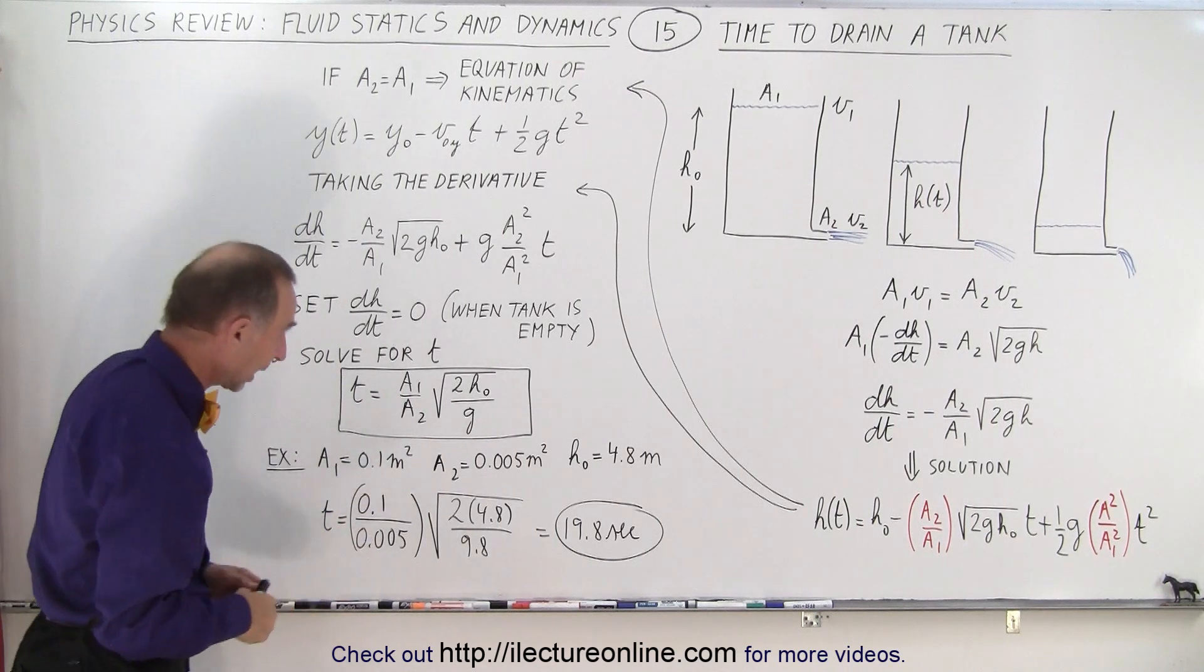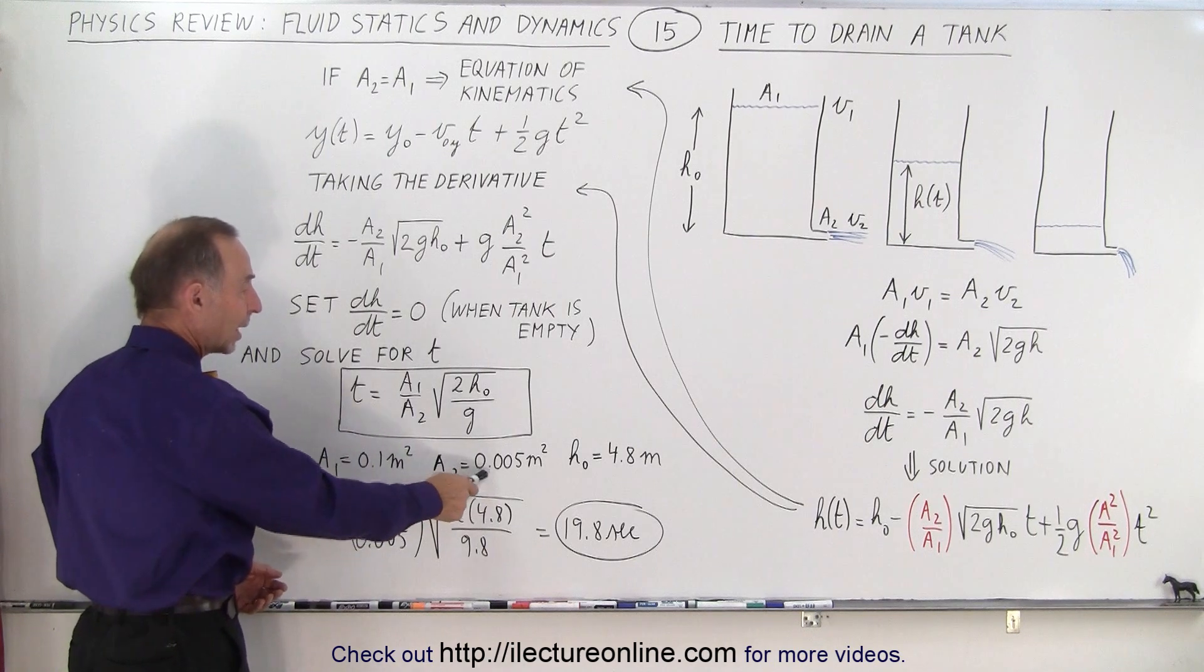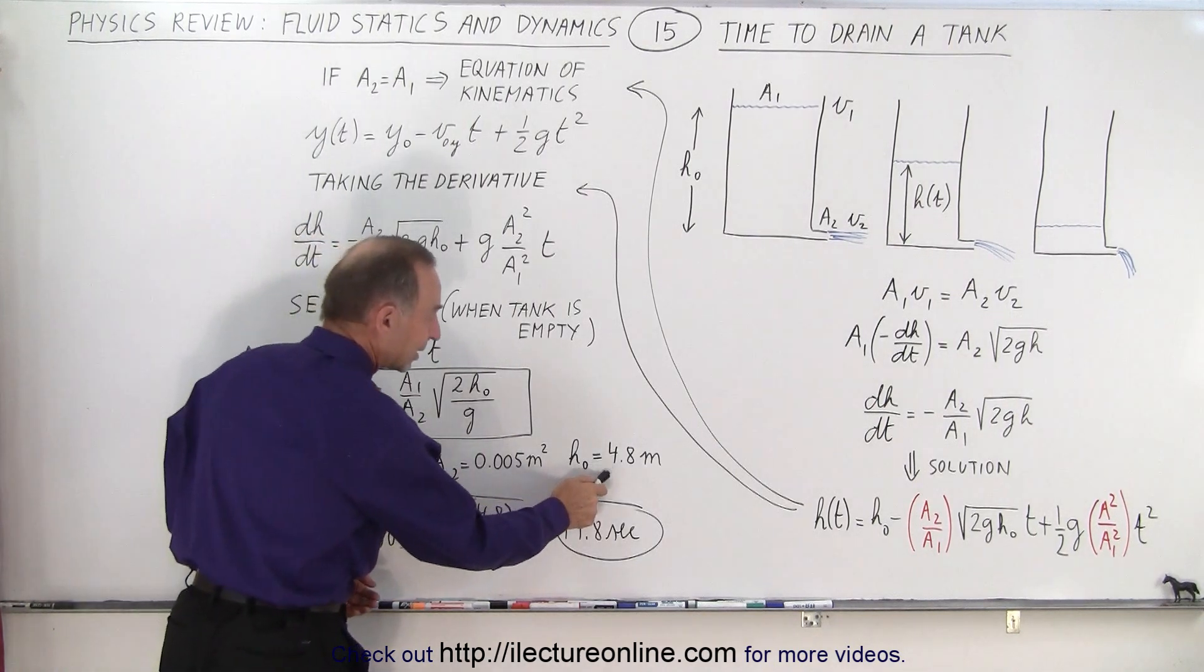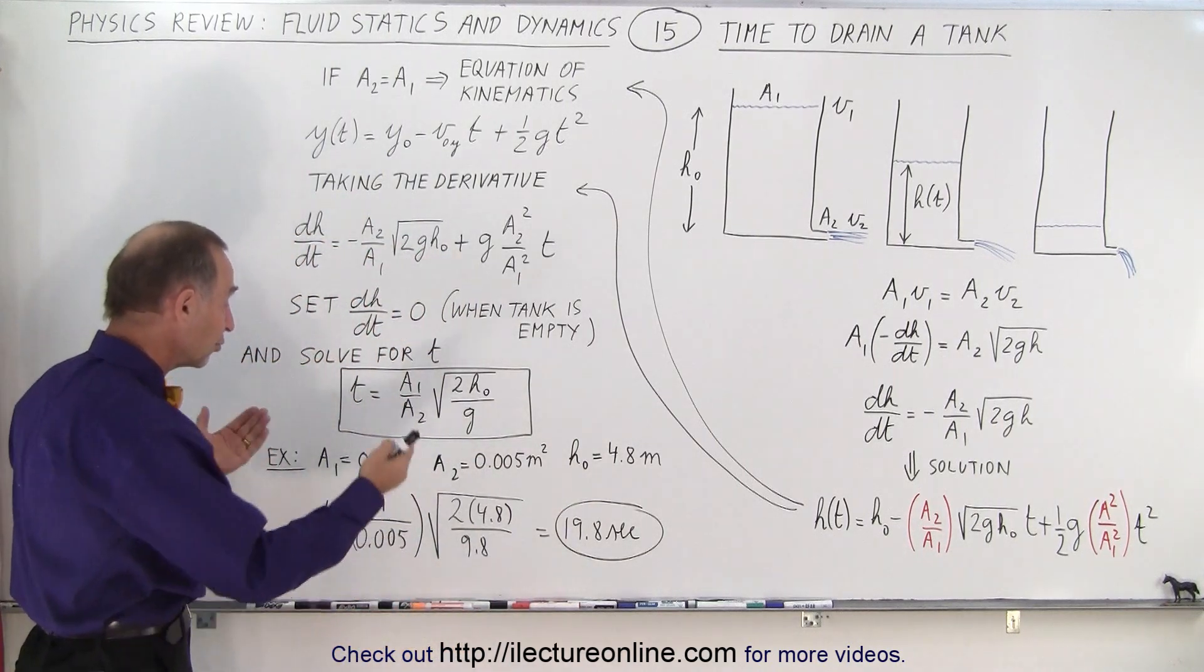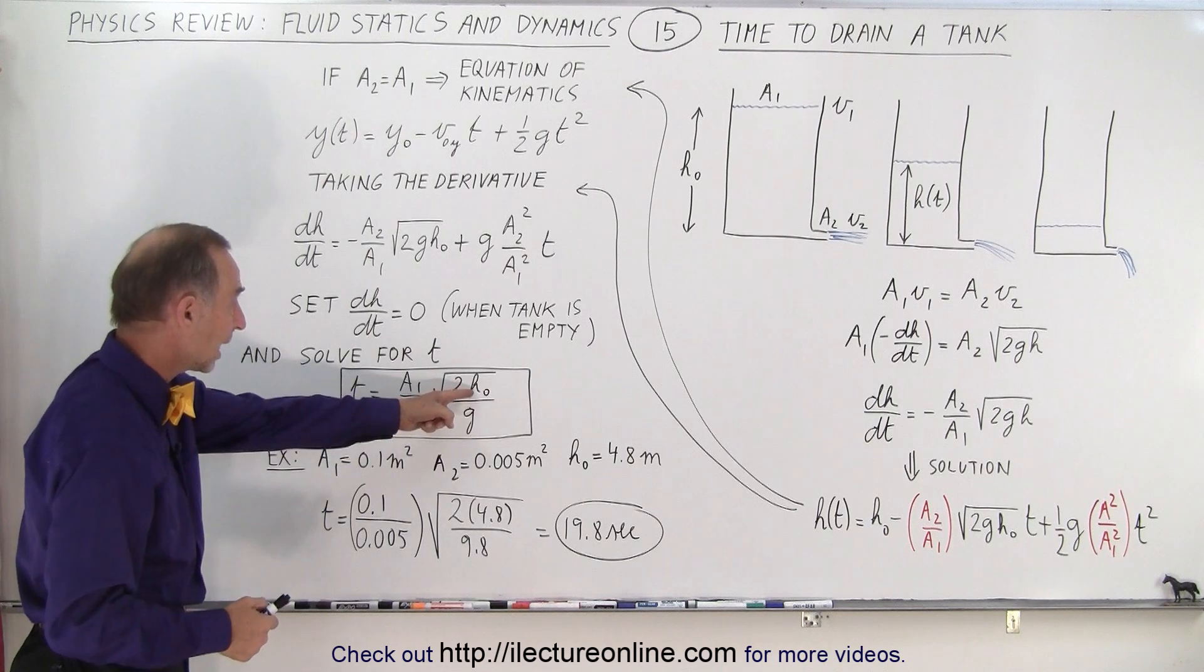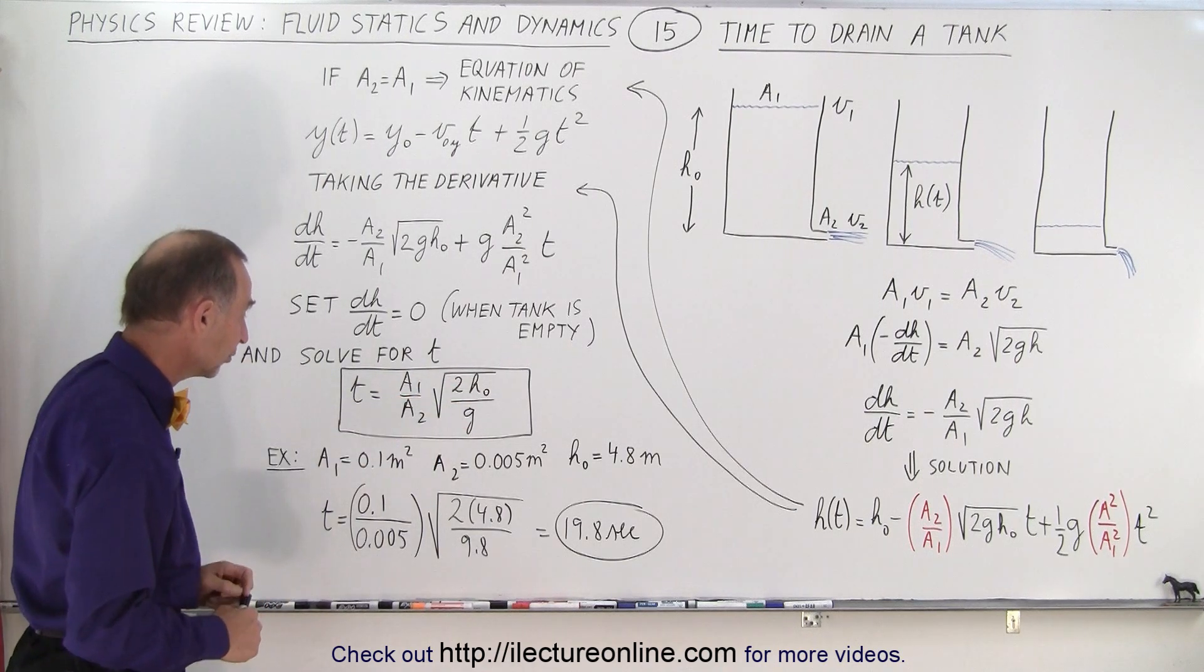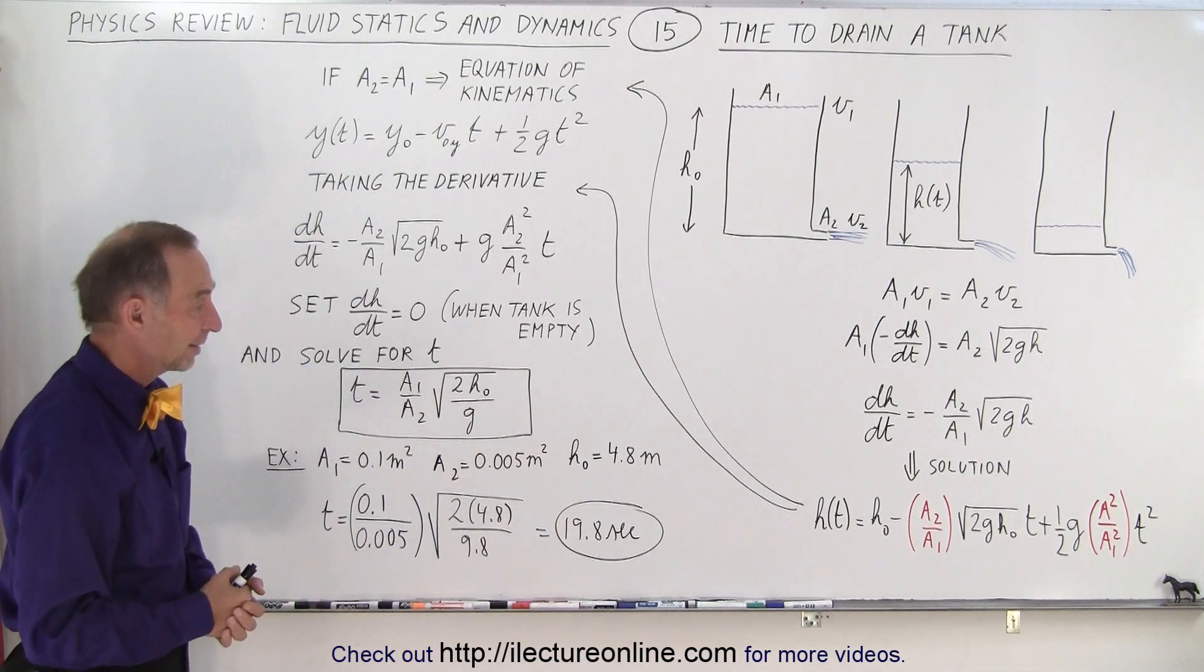Now to see an example of that, let's say that the cross-sectional area at the top is 0.1 square meters, at the bottom 0.005 square meters. Let's say that the initial height of the fluid was 4.8 meters. How long does it take to drain this tank? You simply plug in the values for a1, a2, h0, and g, the acceleration due to gravity, and in this case it would take about 20 seconds to drain that tank.